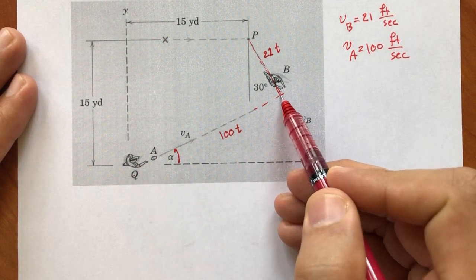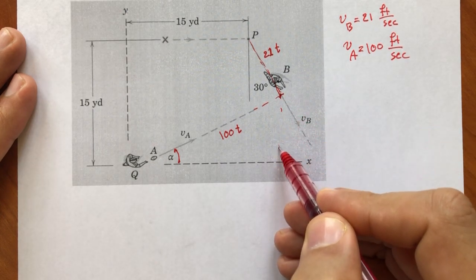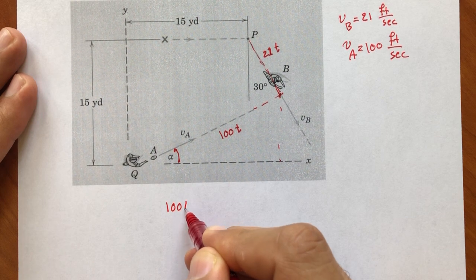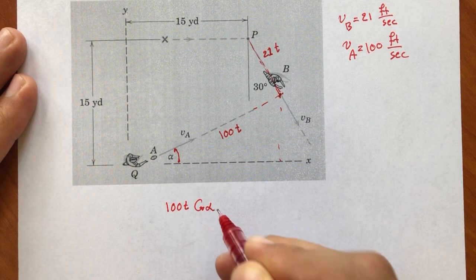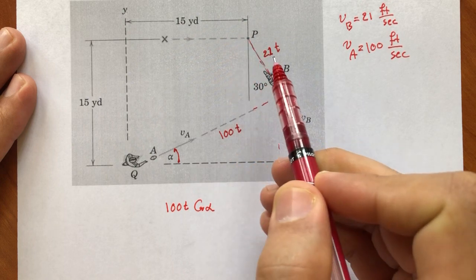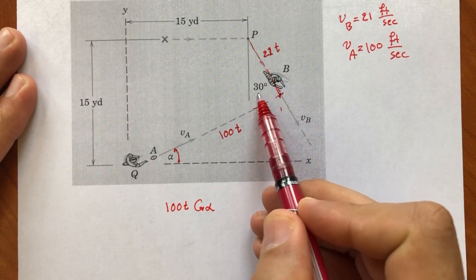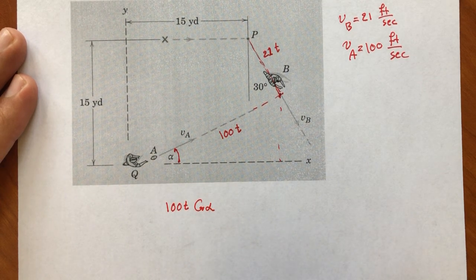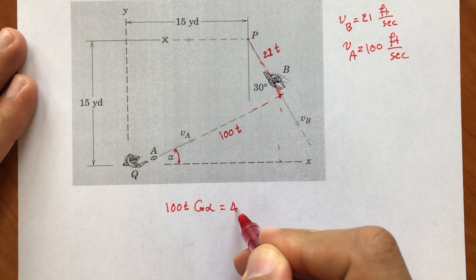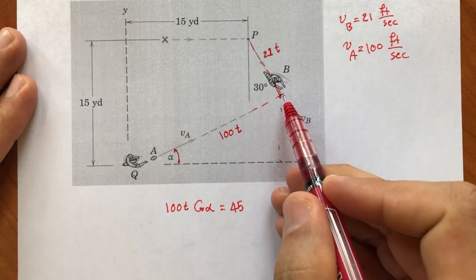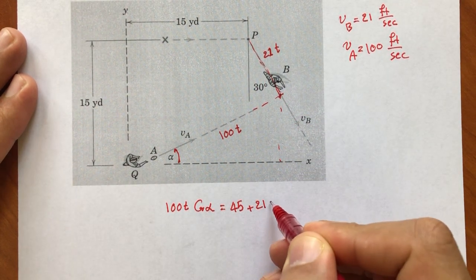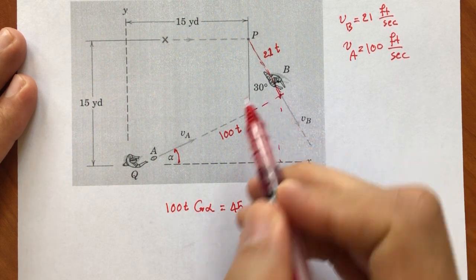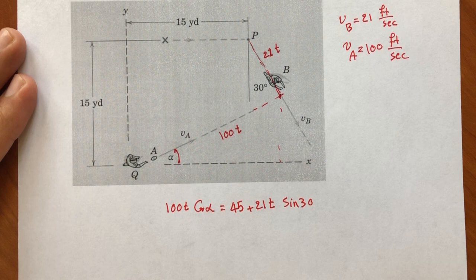In the x-direction: 100t times cosine of alpha equals 45 feet plus 21t times sine of 30. The 45 feet comes from the initial separation of 15 yards converted to feet.